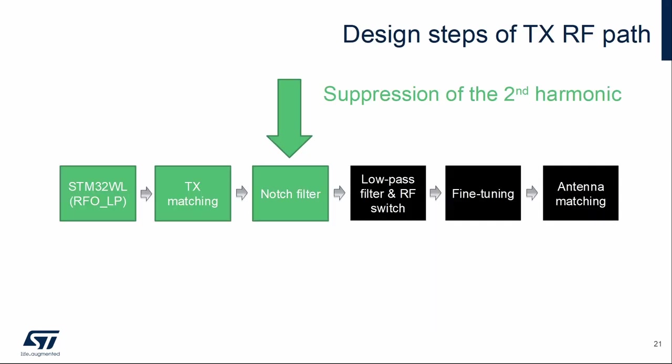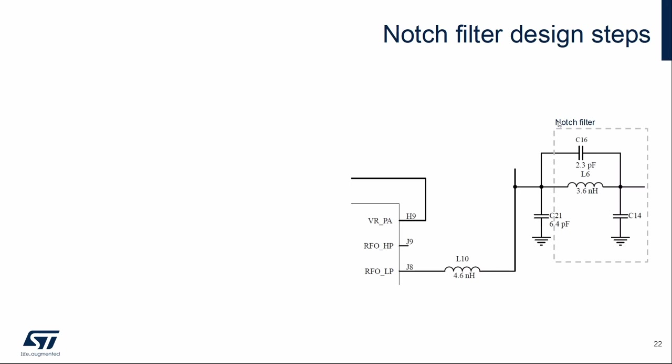The next step is the design of the notch filter. Main purpose of this stage is to suppress the second harmonic. There are also several approaches, how to design this stage. We will show one of them.